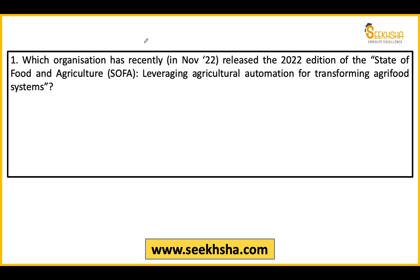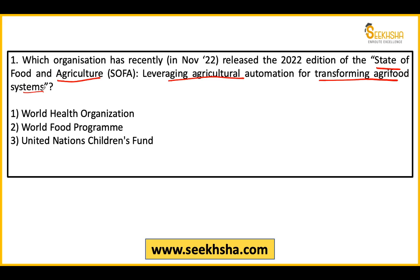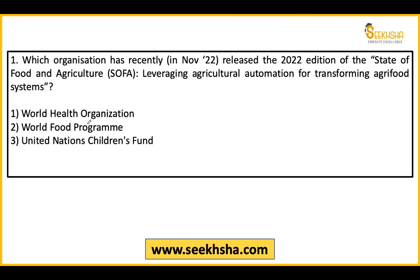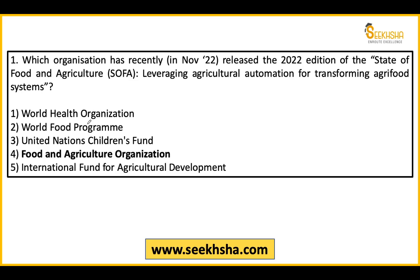First question from November 2022: Which organization has released a report called 'State of Food and Agriculture: Leveraging Agriculture Automation for Transforming Agri-Food Systems'? Options include WHO, WFP, UNICEF, FAO, and IFAD. The right answer is Option 4 — the Food and Agriculture Organization (FAO).